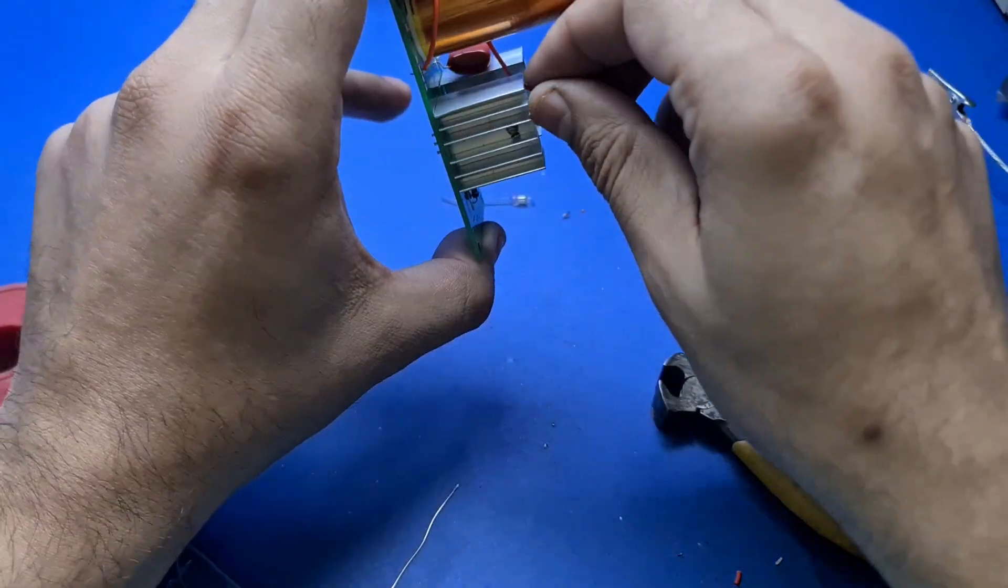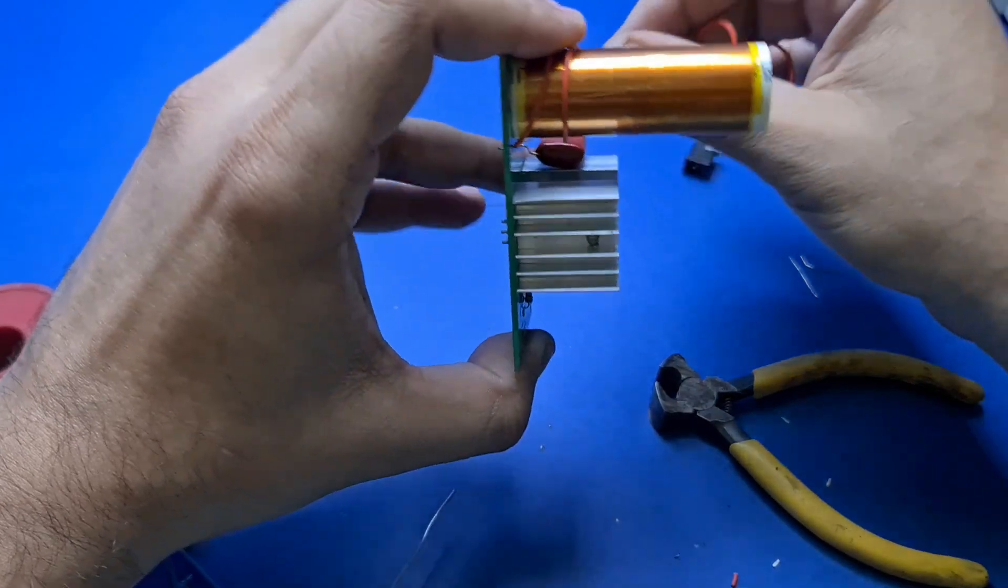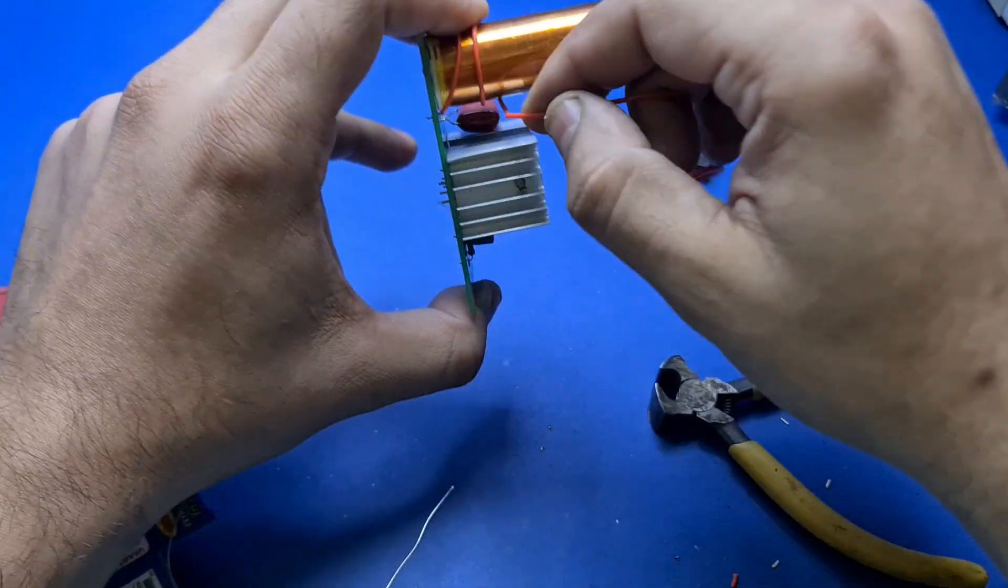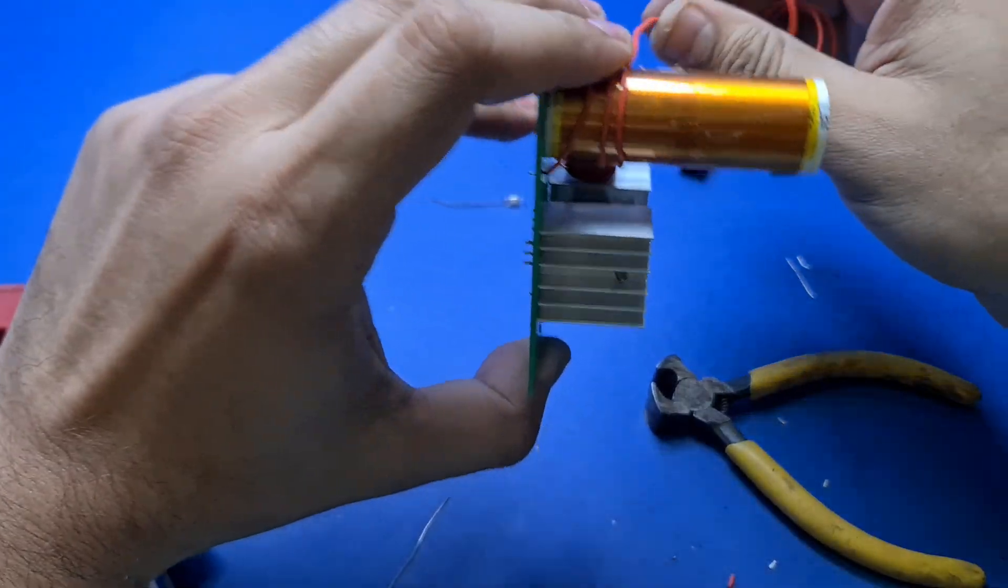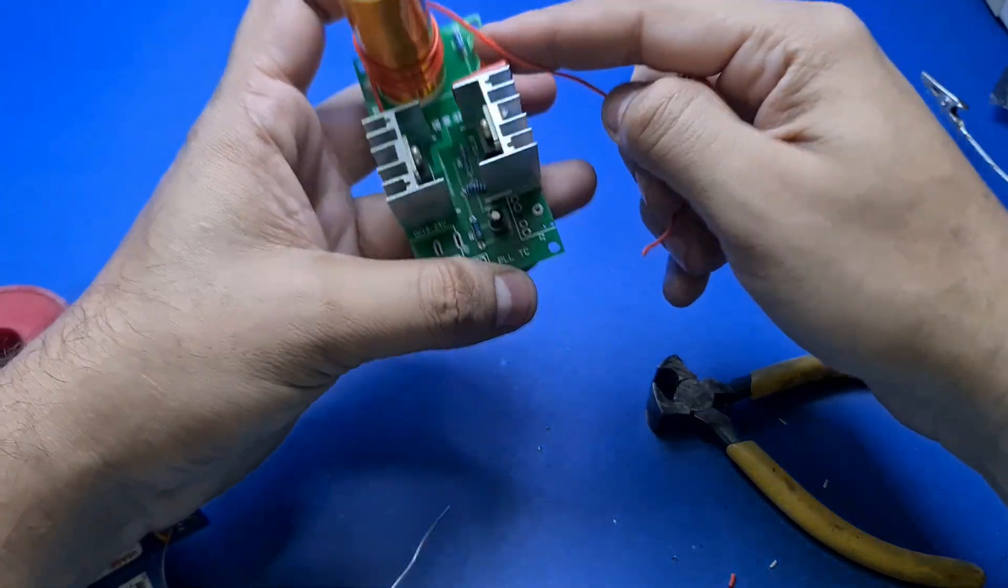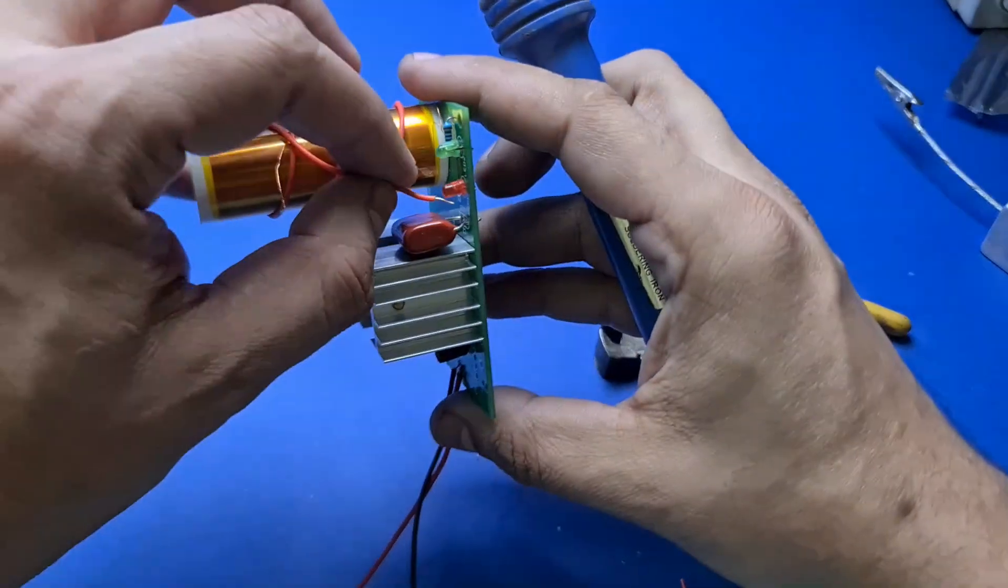Now wind three turns of this wire on the Tesla coil, then cut the remaining wire and solder the second end of this wire to the PCB.